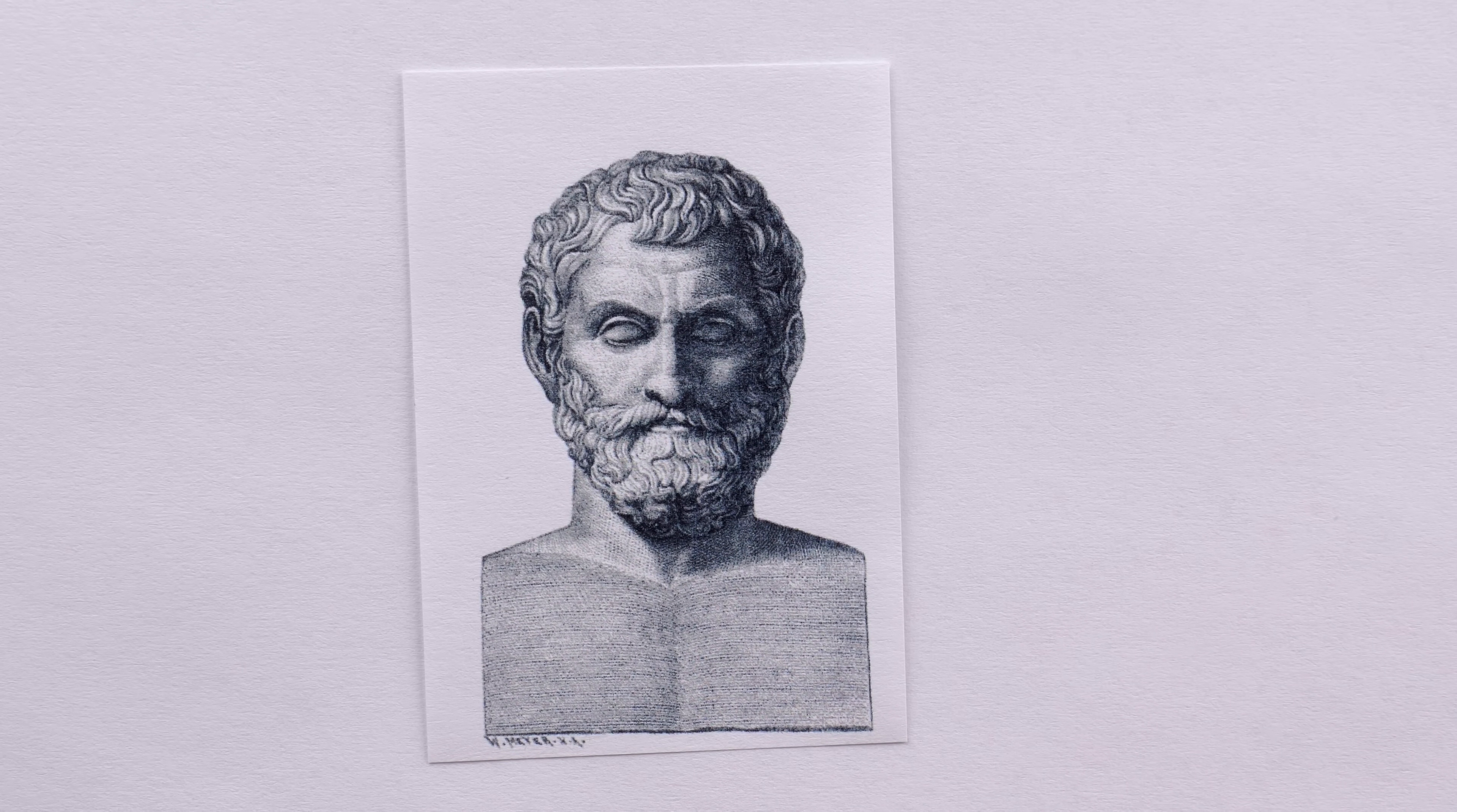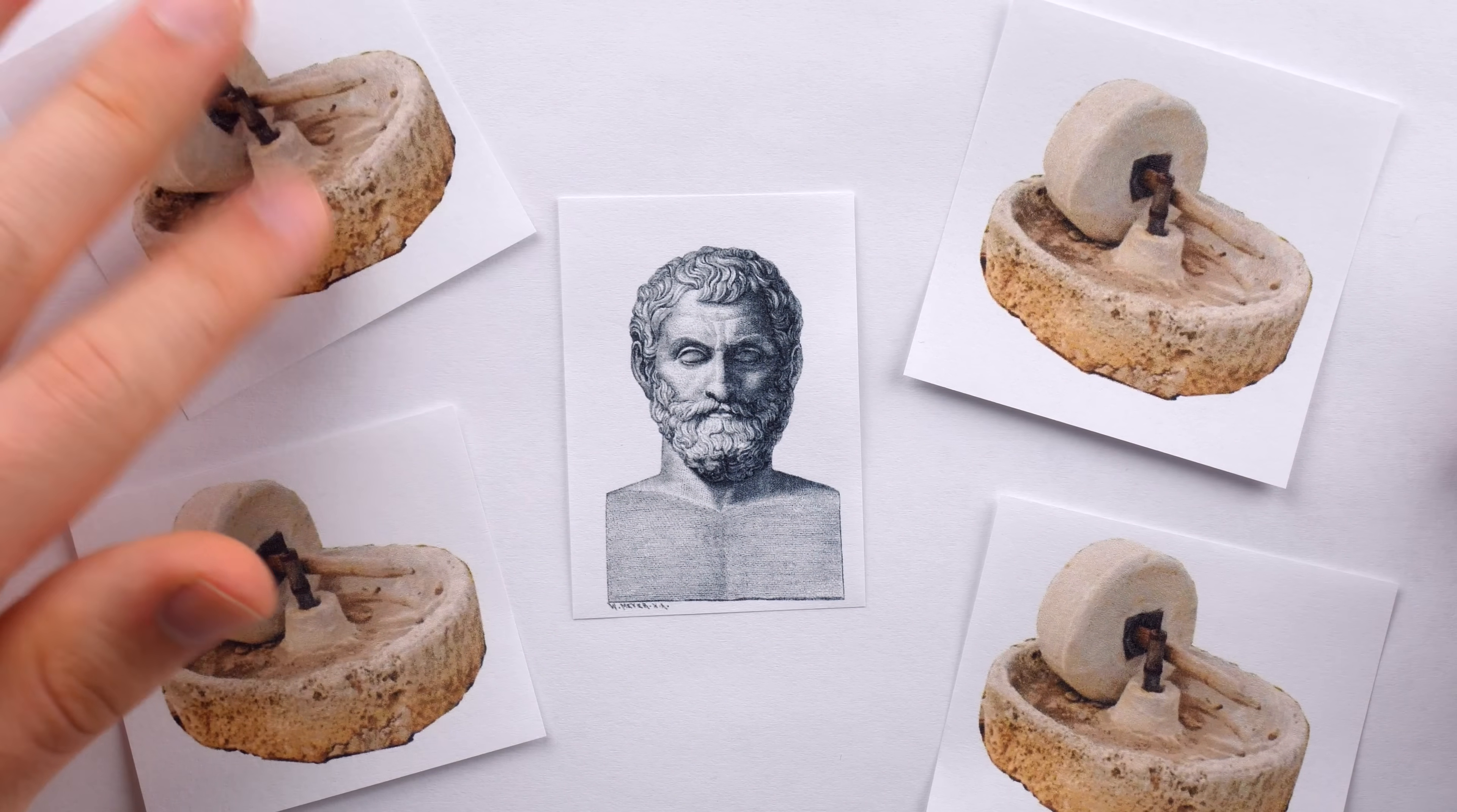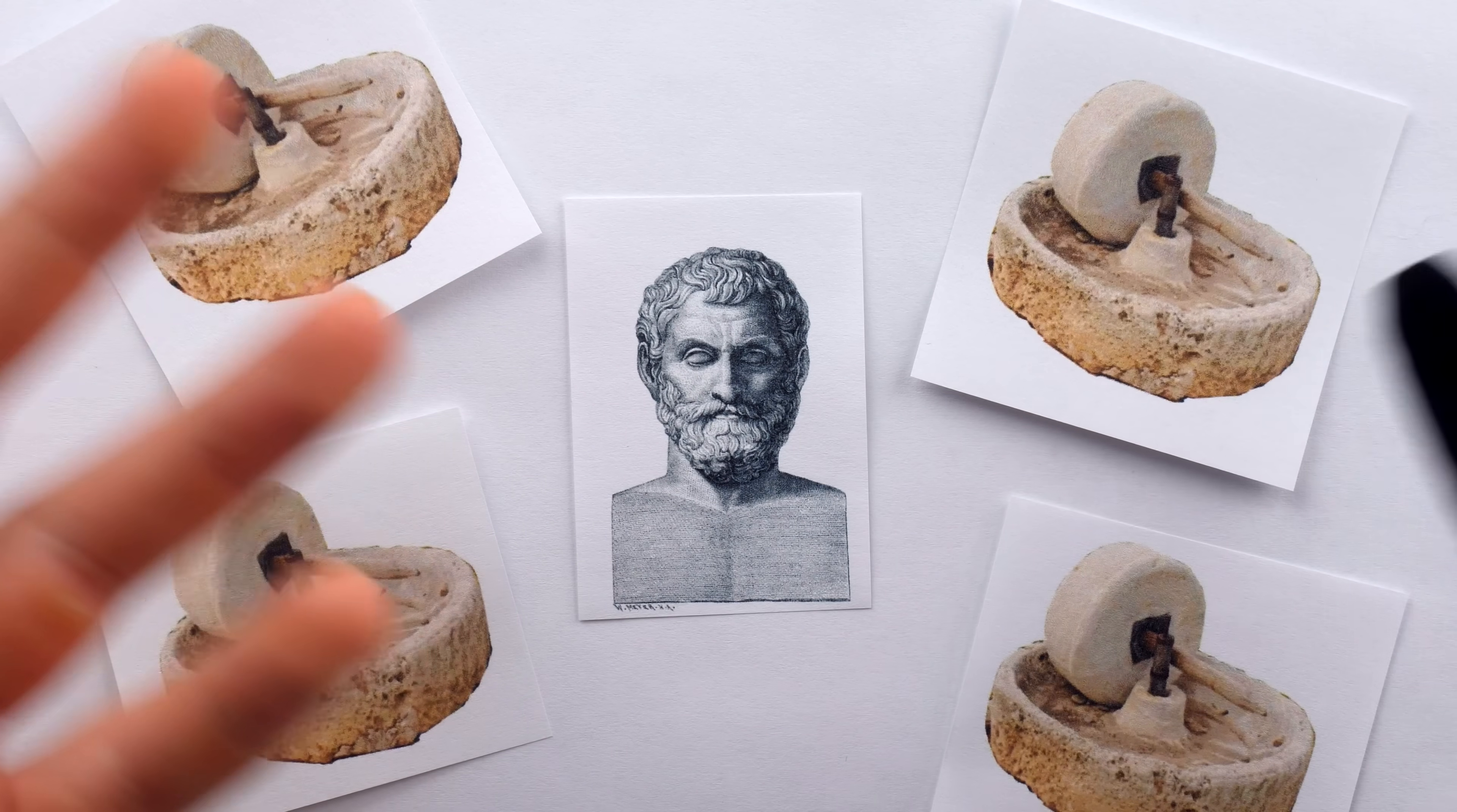Aristotle recalls another story about Thales, in which years had passed without the olive trees producing fruit. This would not be good for those who ran the olive presses, but Thales, foreseeing good weather in the years to come, bought up all of the olive presses around Miletus. Some say that having a monopoly on the olive presses, he was able to earn a great sum from his investment, whereas others say he sold at a reasonable price, having proved his point that a philosopher could earn great wealth if he wished.